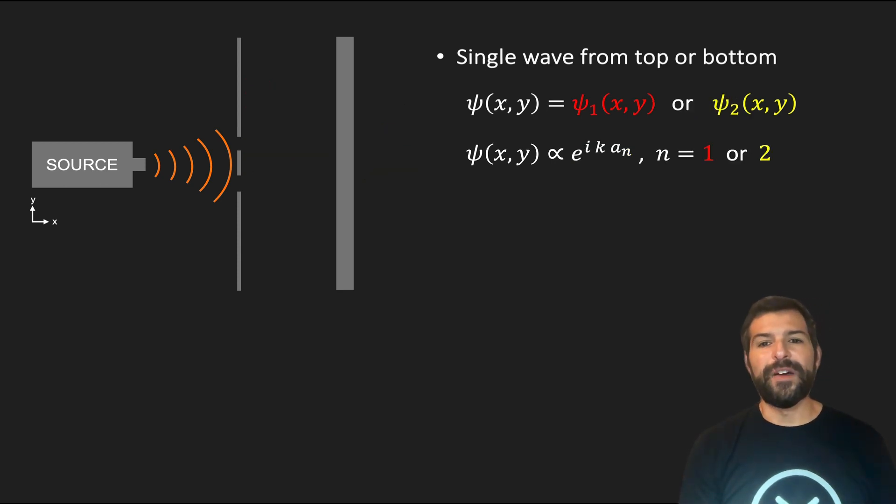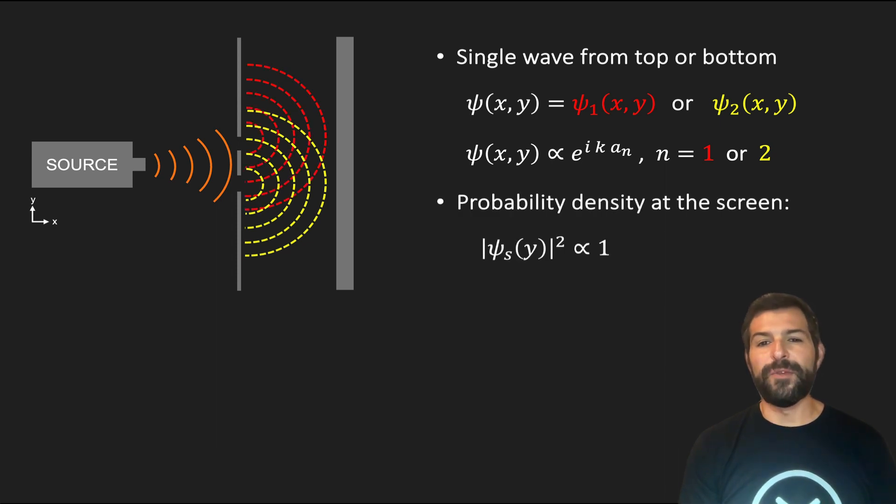Similarly, we showed that for the case in which we measure the particle right at the slits, we no longer have a superposition, but rather a single wave emerging from either the top slit or the bottom slit, producing no interference at the screen. And once again, the reason we derived a constant probability density across the screen, rather than the sum of two probability distributions concentrated right where the slits are, is due to the simplifying assumptions we made.